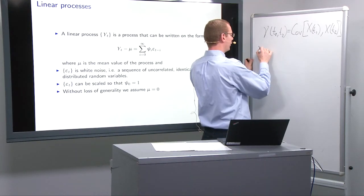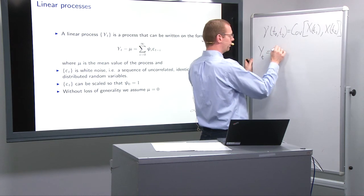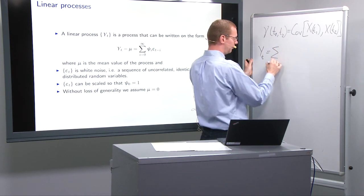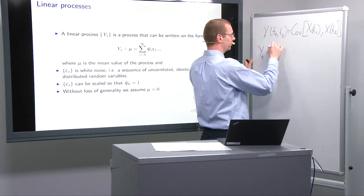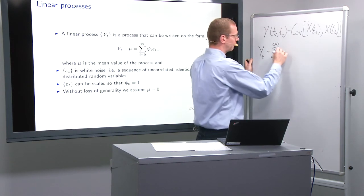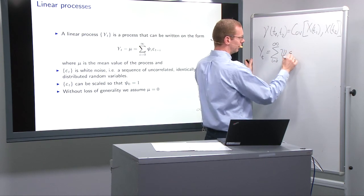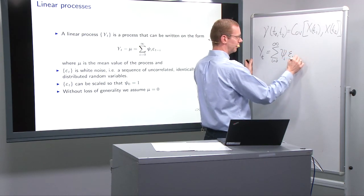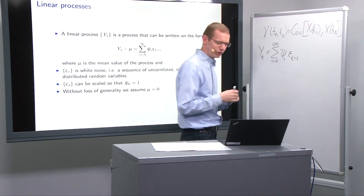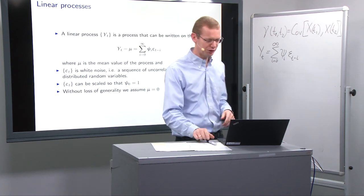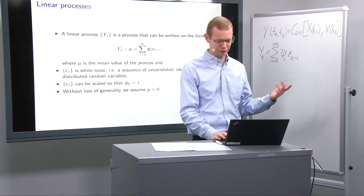How we define it, and I will write it without the μ, is the infinite sum i equals zero to infinity of ψ_i multiplied by ε_{t-i}. So that's the generic definition of a linear stochastic process.